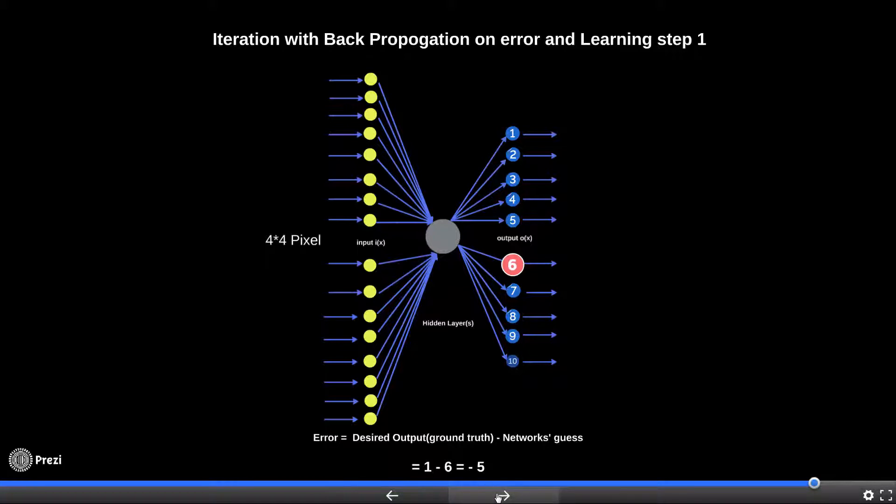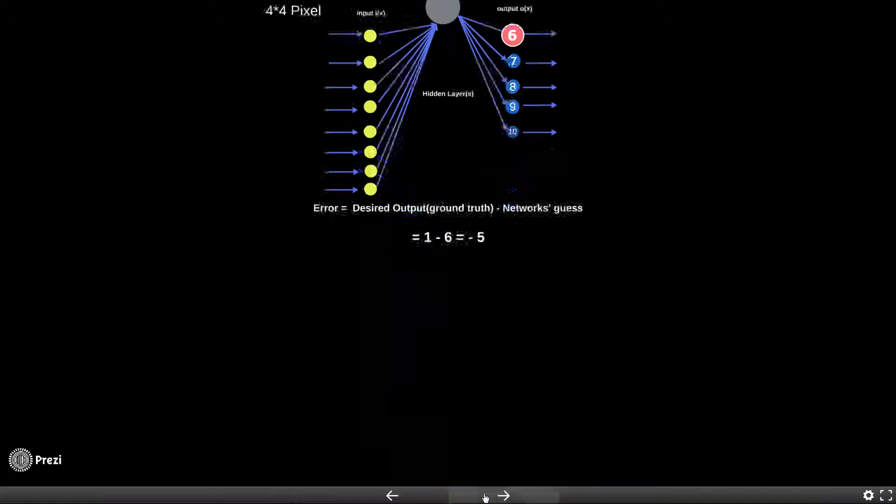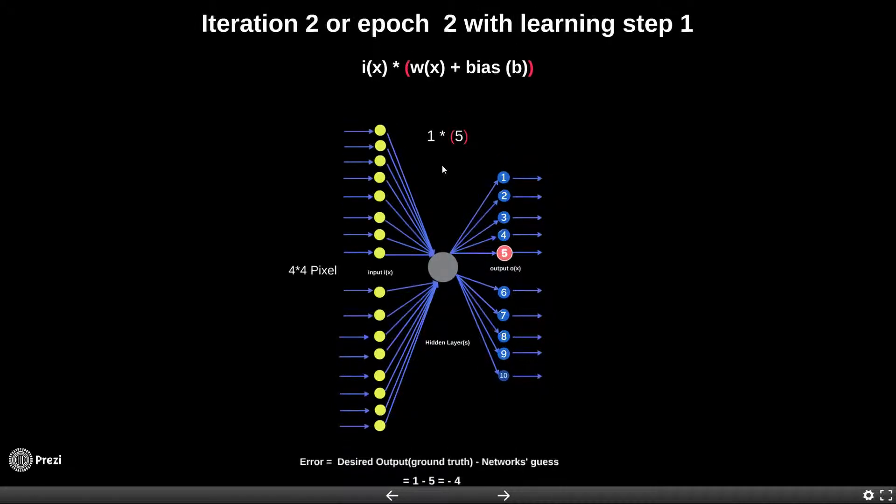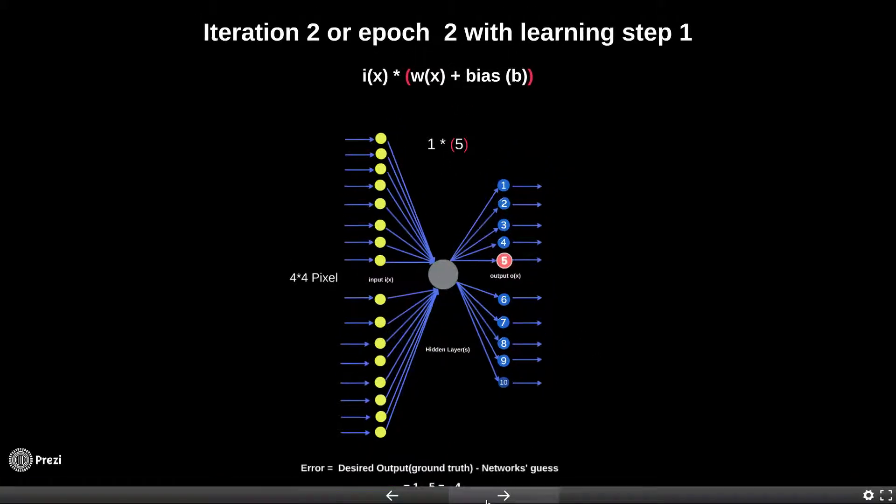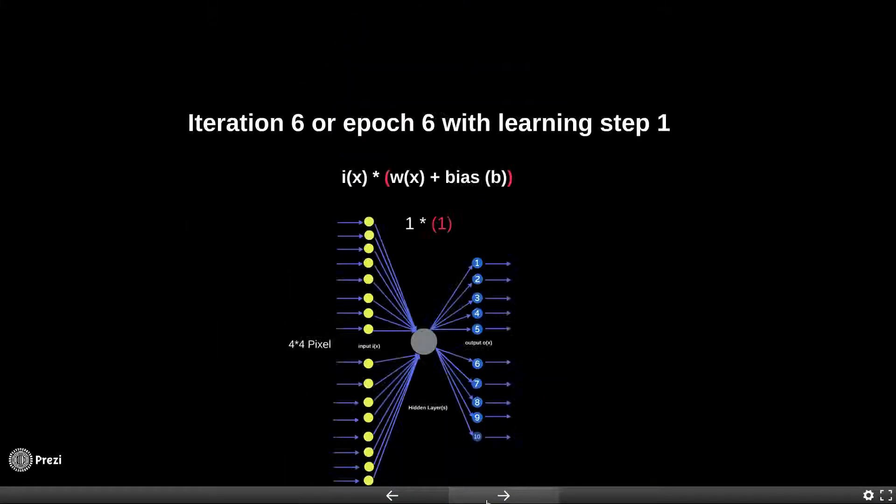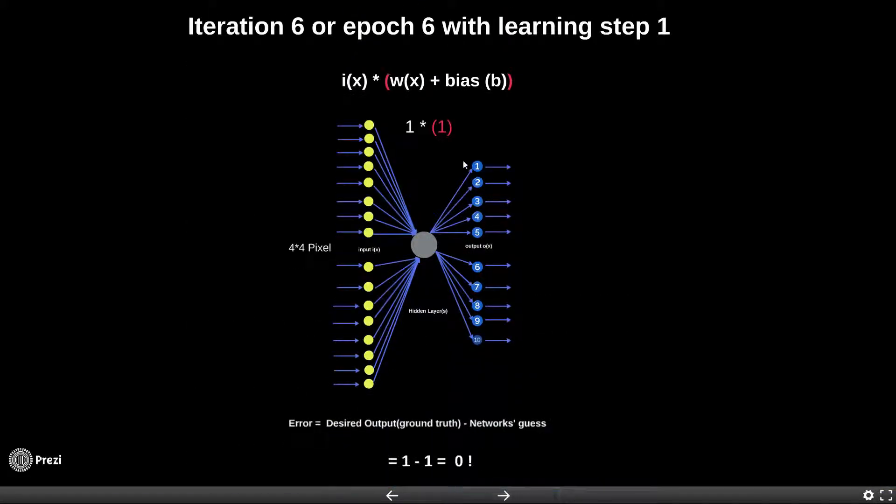The step size is 1, also called the learning step. If you continue on the step size, the next time the bias is going to be 5 and therefore the error is going to be 4. After 6 iterations or epochs, the weights and biases are 1 and hence the error is 0. This combination of weights and biases is what is called a trained model.